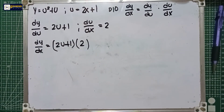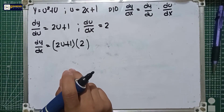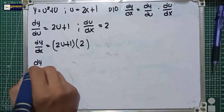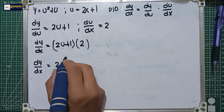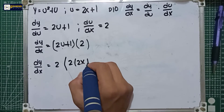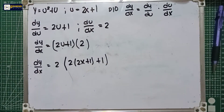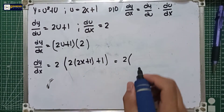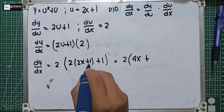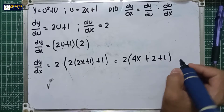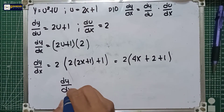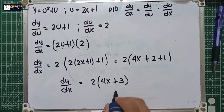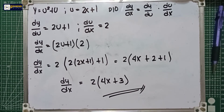We can use the distributive law or substitute back using u = 2x + 1. So dy over dx equals 2 multiplied by (2u + 1), substituting u = 2x + 1 gives 2(2(2x+1) + 1), which simplifies to 2 multiplied by (4x + 2 + 1), giving a final answer of dy over dx equals 2(4x + 3).